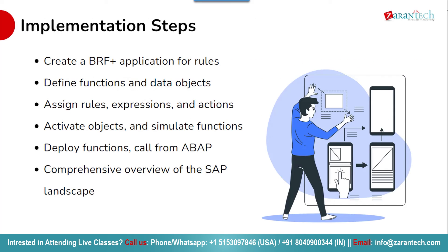Moving on to the steps for implementing SAP VIM. To implement SAP VIM, there is a set of well-defined steps to follow. The process starts with creating a BRF+ application to define business rules and functions. Next, data objects are defined to represent relevant entities and attributes, and rules, expressions, and actions are assigned to define the solution's behavior. Once deployed, the functions can be called from ABAP programs to integrate with the SAP landscape. A comprehensive overview of the SAP landscape is essential to ensure successful implementation with seamless integration and optimal performance.